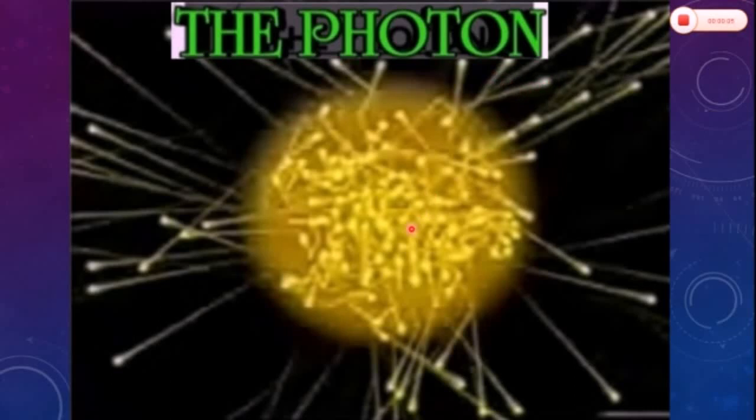A photon is a packet of electromagnetic energy with a specific set of properties. Its charge is zero, its spin is one, and it can have two possible orientations: clockwise or anticlockwise. Energy of a photon is given by the famous Planck's equation.